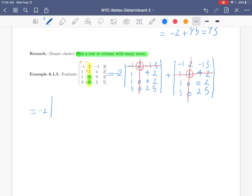Now we will have negative twice: 1, 4, 2, 1, 0, 2, 3, 2, 5. Plus minus 1, minus 1, 3, 1, 0, 2, 3, 2, 5. So we have two 3 by 3 matrices.